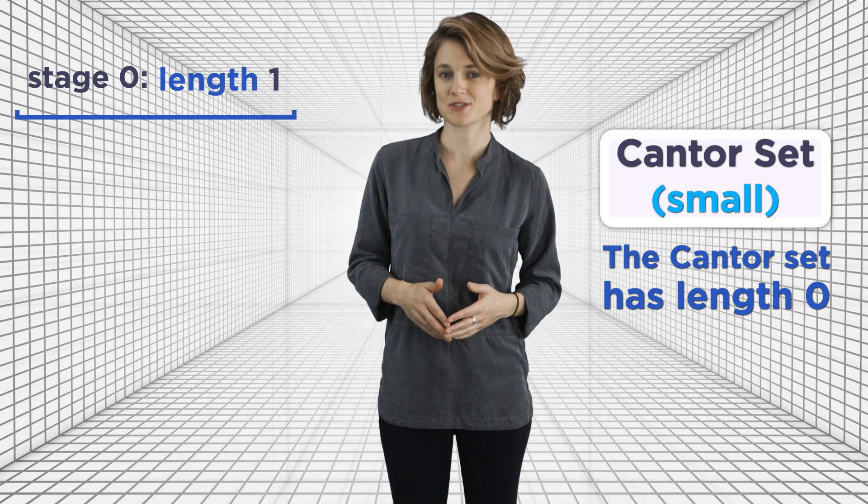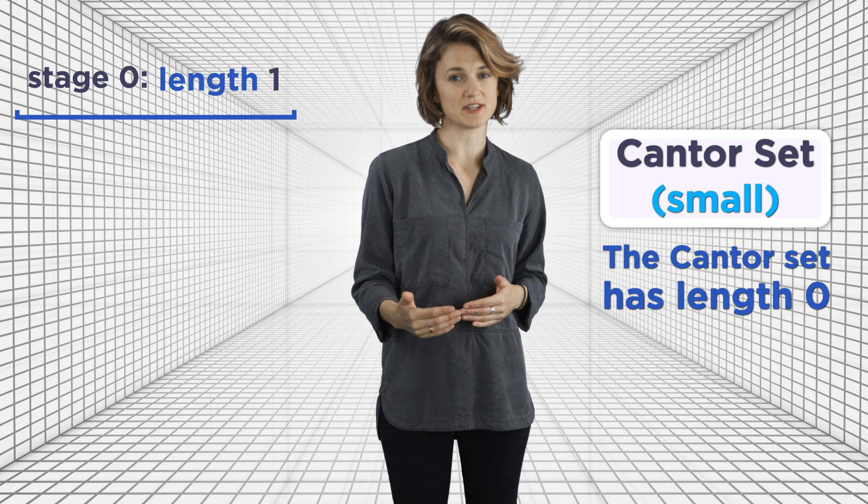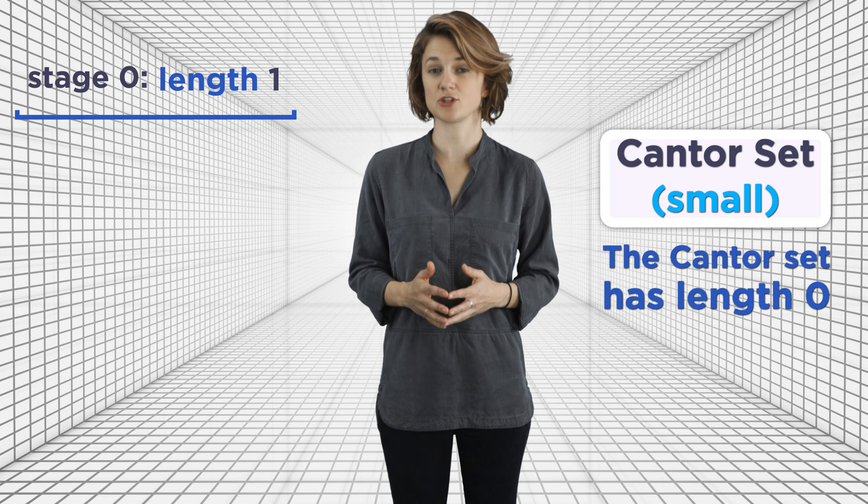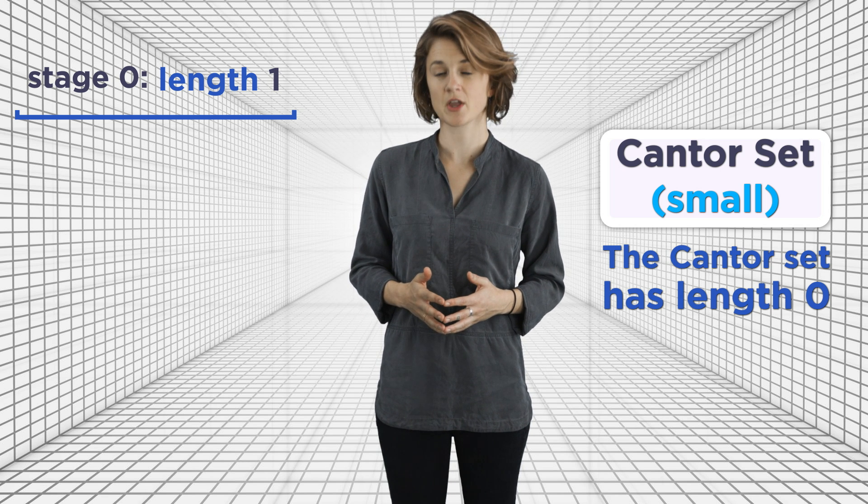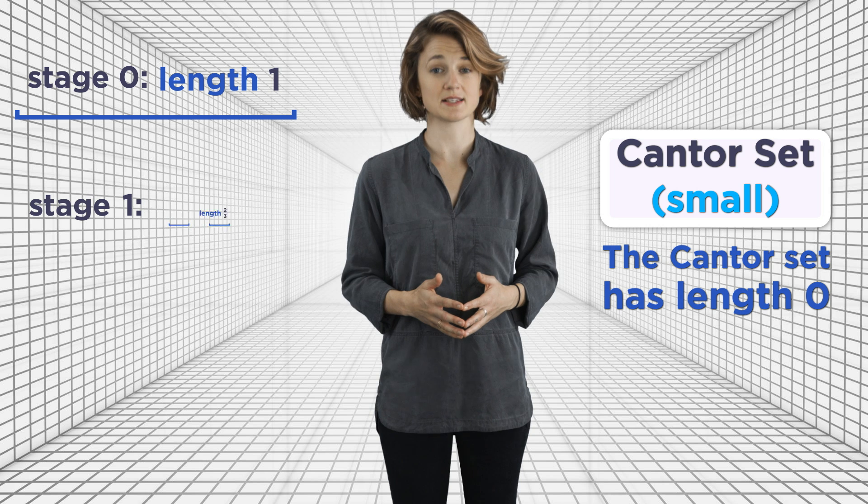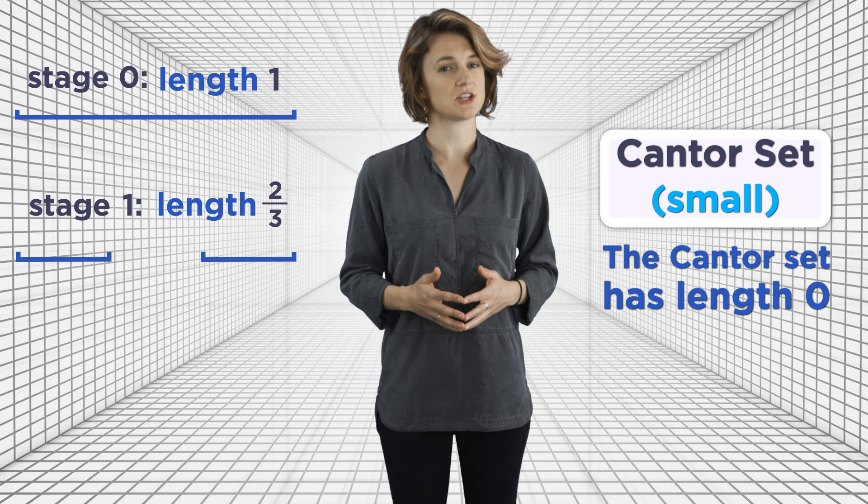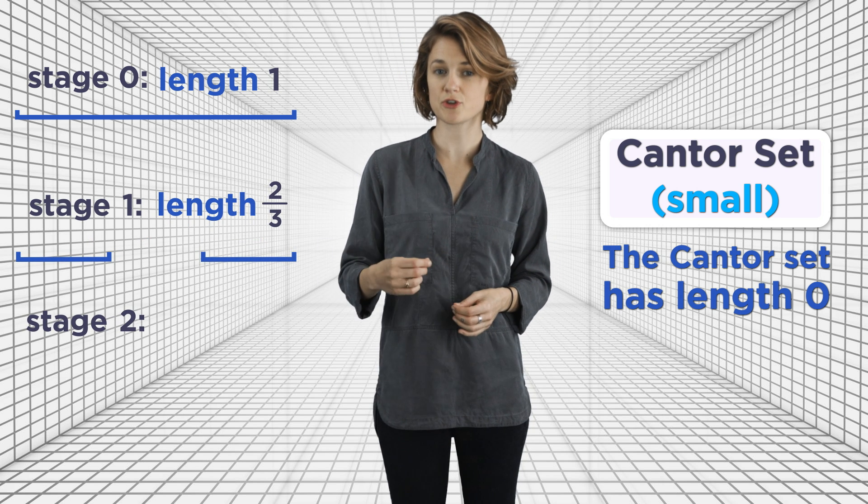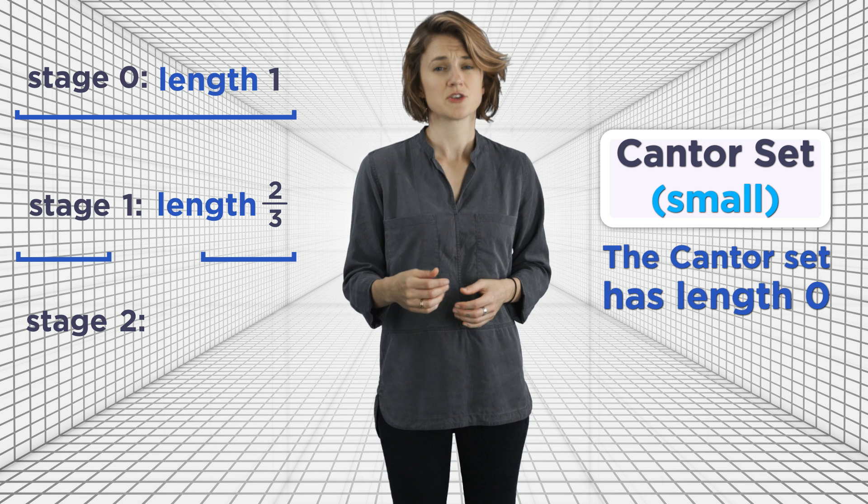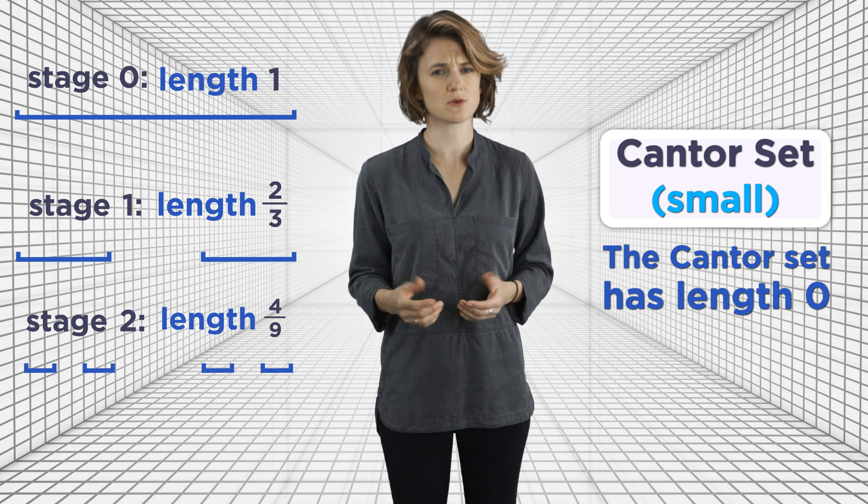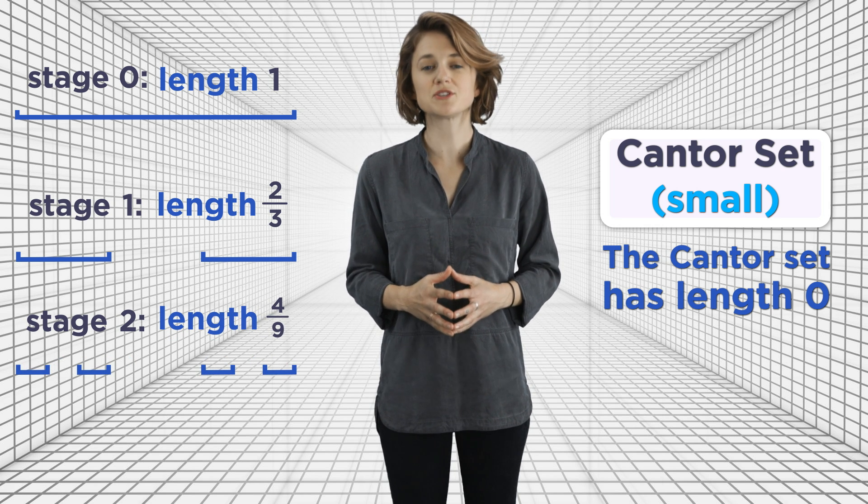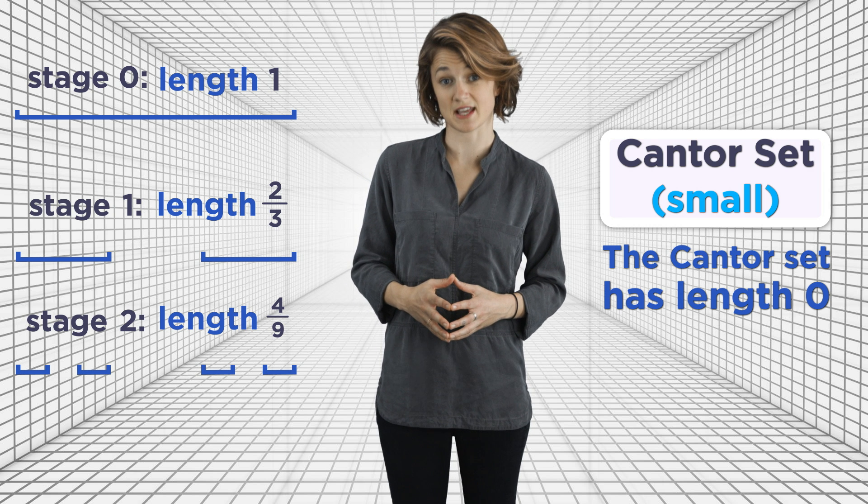At each stage after this, we remove one-third of the previous set, leaving a set that is two-thirds the length. So at stage one, the set has length 2/3. At stage two, the set is two-thirds the length of that set. So it has length 2/3 times 2/3, or 4/9. The set is always two-thirds the length of the previous set.